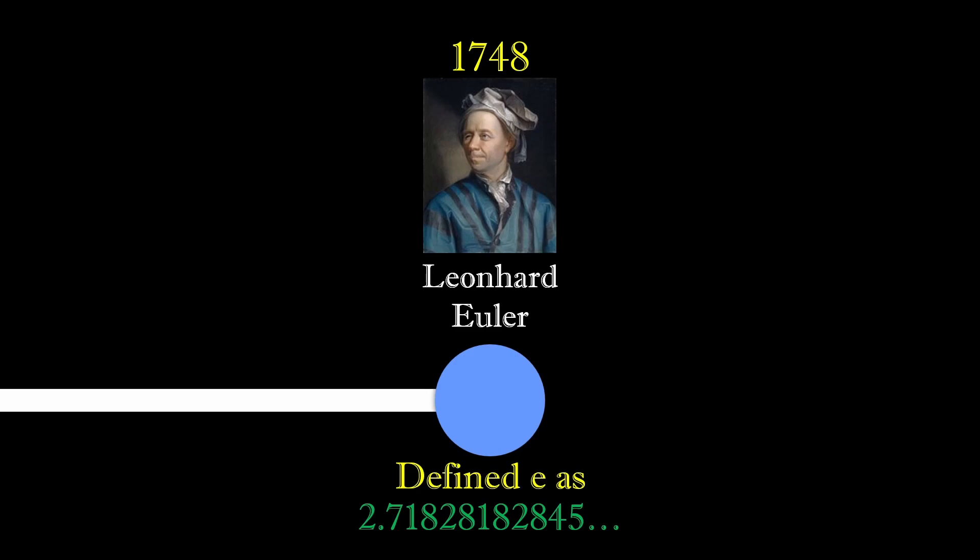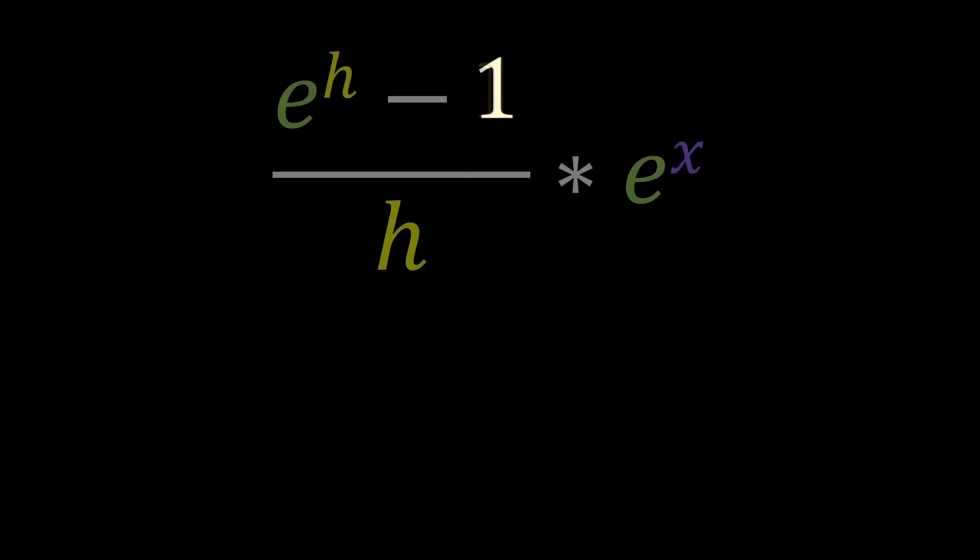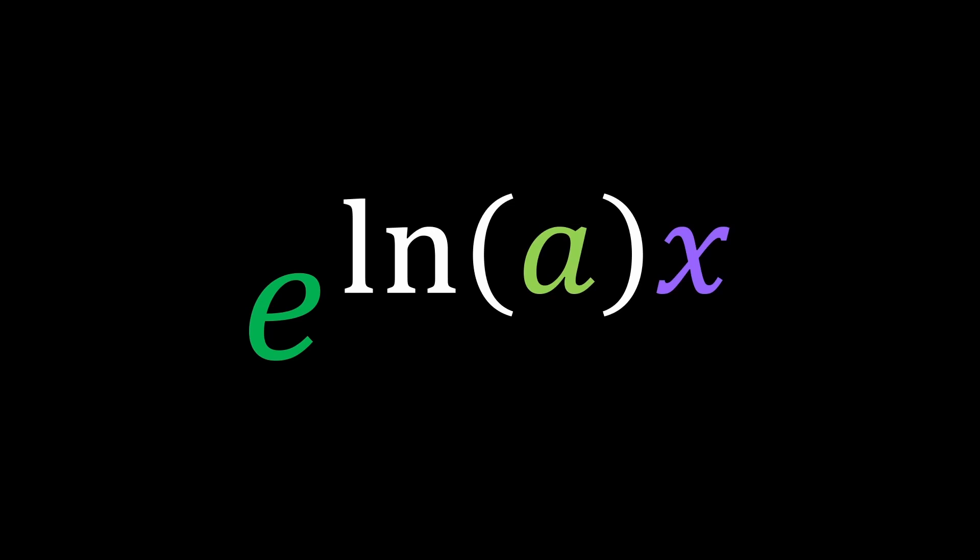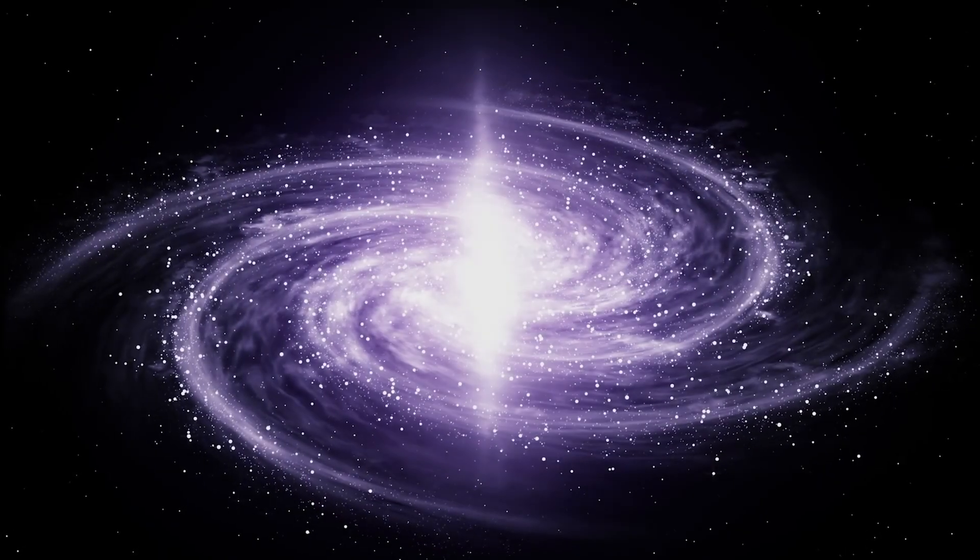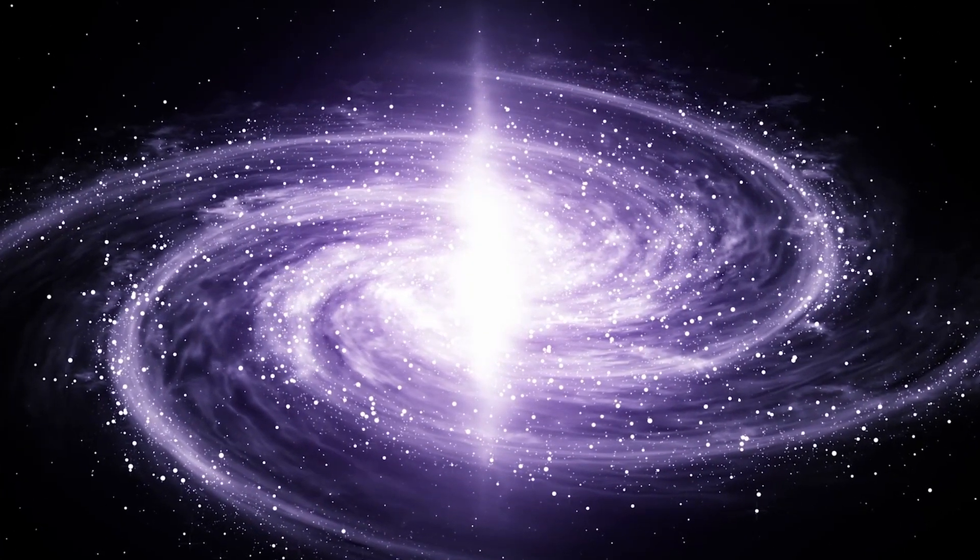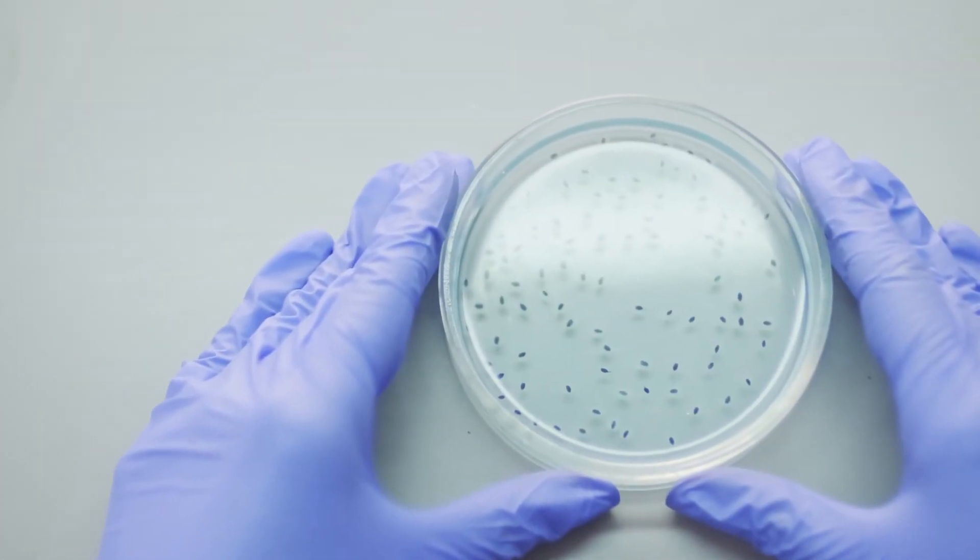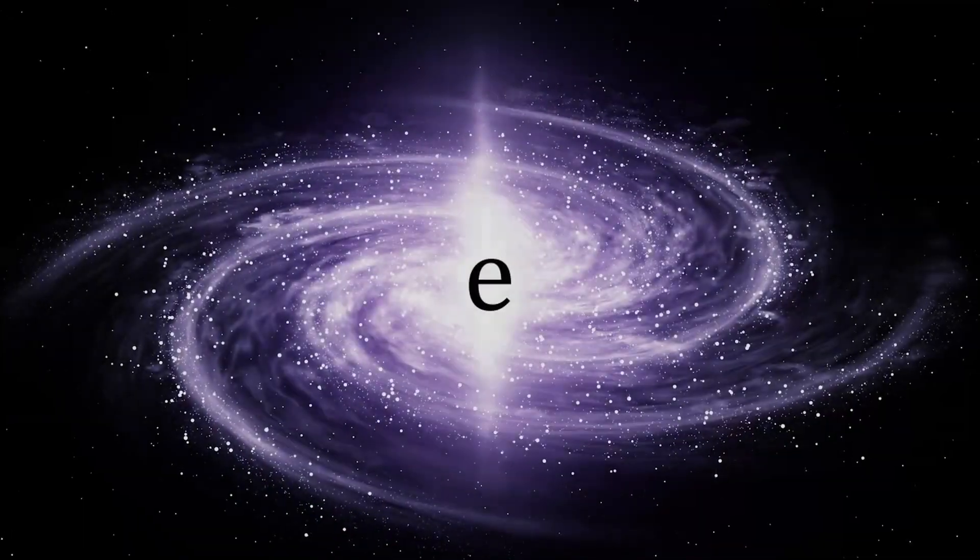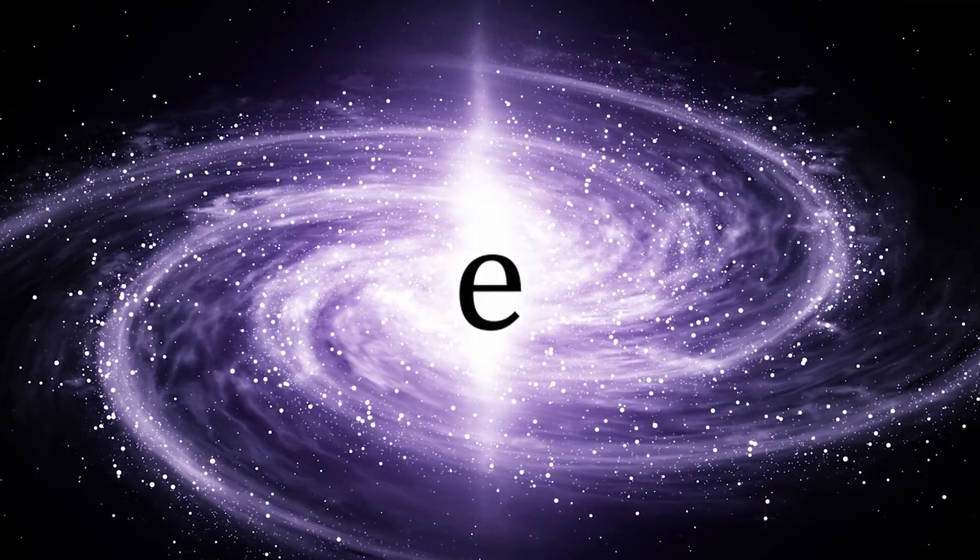And this discovery is what makes e the natural number. Because it's the only number with an exponential growth constant of 1, we can neatly express any other exponential functions in terms of e. And what that means is that for any process in the universe where the growth of something is proportional to its current value, like population growth, compound interest, or even the half-life of atoms, e will be there, almost as if it's a part of nature.